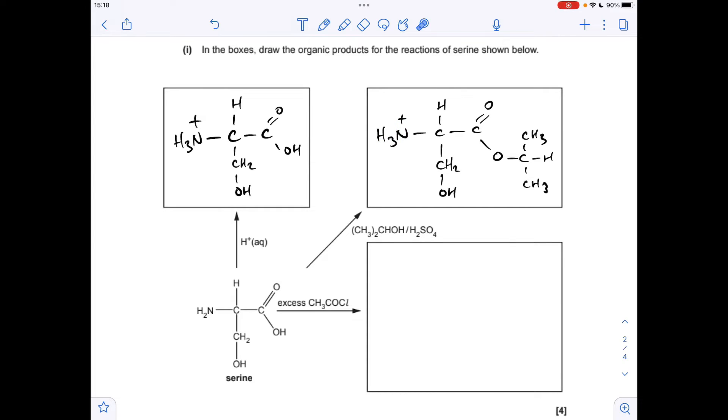And the third reaction, reacting serine with an excess of ethanoyl chloride. Well, this can react with two groups in this molecule. It can react with the OH alcohol group, and it can also react with the amine group. So we're going to form an ester at the bottom there, and we're going to form an amide on the left hand side there.